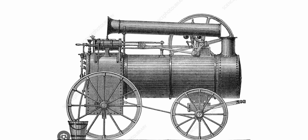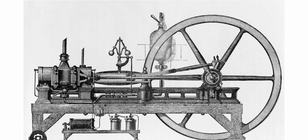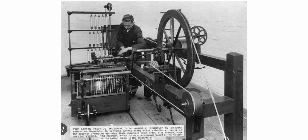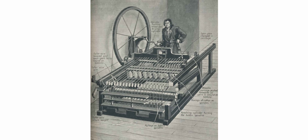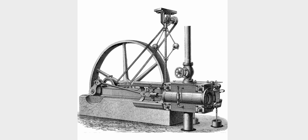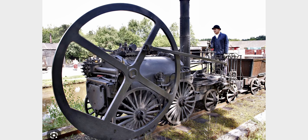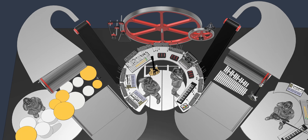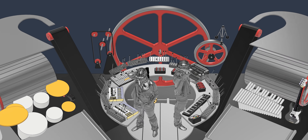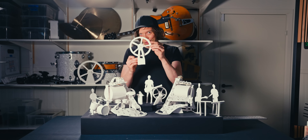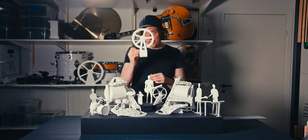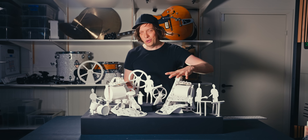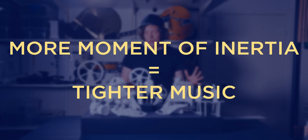I absolutely love the aesthetics and identity of all these machines. This is true form from function. At the time, these machines were the cutting edge of technology, and I think it's cool that these large flywheels brought the industrial revolution that kind of leads to our modern society. Which brings me to my machine, the Marble Machine. The Marble Machine is a unique modern example of a machine that needs moment of inertia — and a lot of it. Moment of inertia is resistance to change in rotational tempo, which means resistance to change of the music tempo. So the more moment of inertia we have, the tighter the music will be.